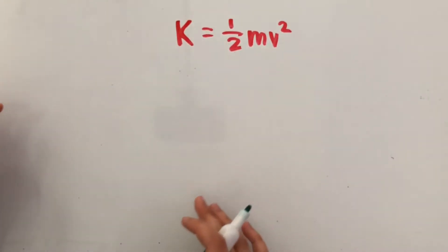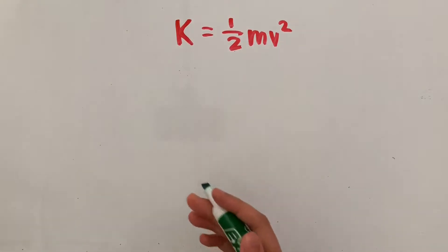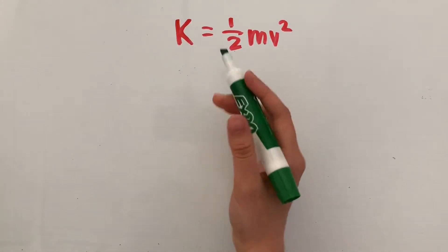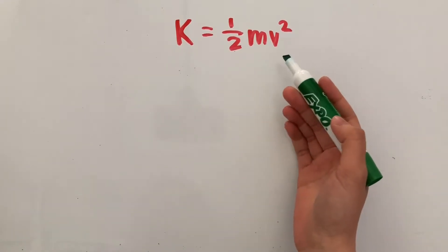This equation is probably going to be one of the biggest concepts that you'll ever have to learn in a physics course. And what it's saying is that kinetic energy is equal to one-half times the mass of an object times its velocity squared.